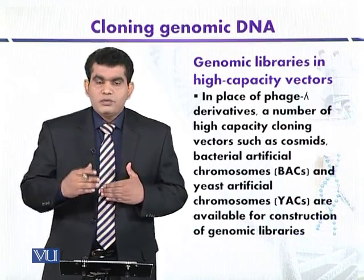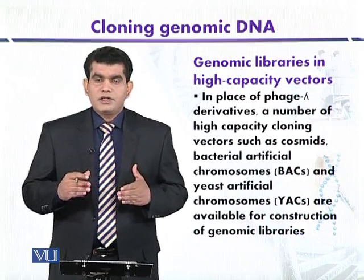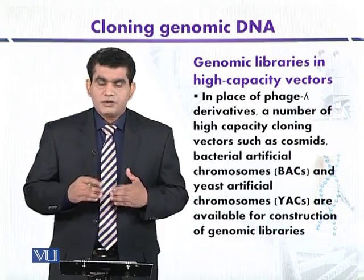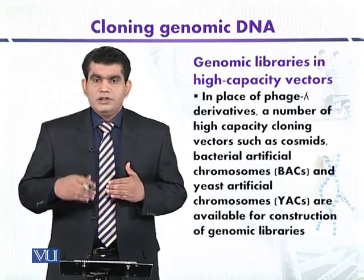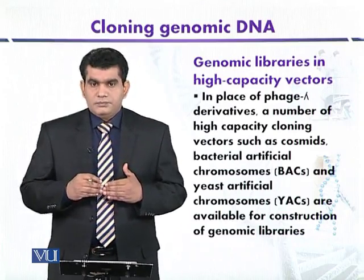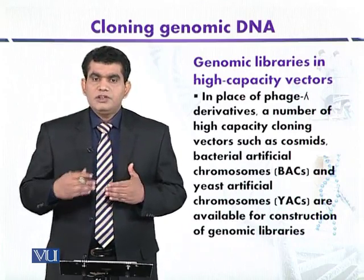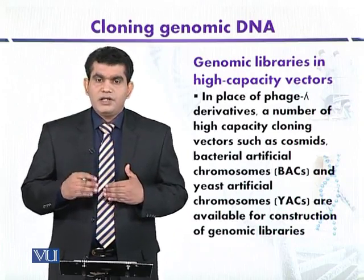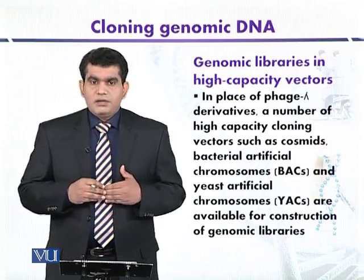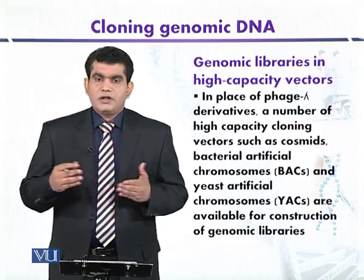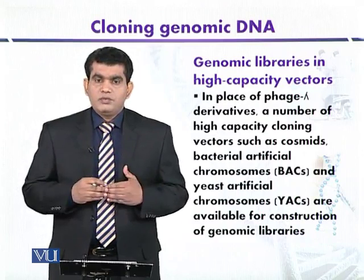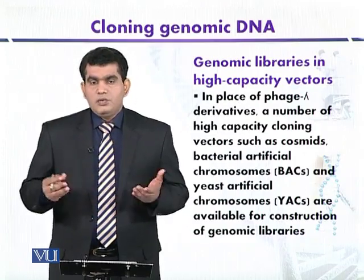If we have a large number of clones, we have a lot of screening to do. But if we use high capacity vectors, that screening burden is reduced. This is one of the key advantages of using high capacity vectors. Another example of a high capacity vector is the cosmid, which can clone up to 45 kilobase of DNA fragment.